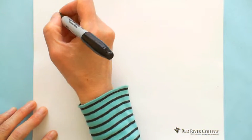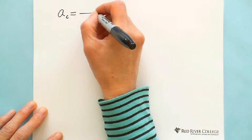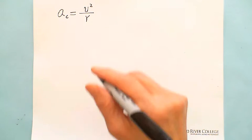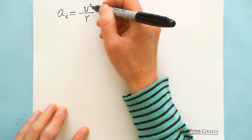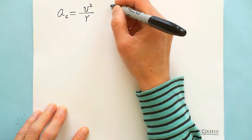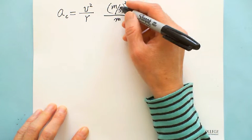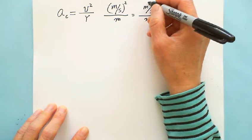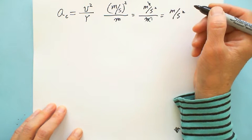Now I'll talk about centripetal acceleration. There are three formulas. The first one equals V squared over R. V is in meters per second, and R is the radius of the circle in meters. So the units work out to meters per second squared. This is the first formula.